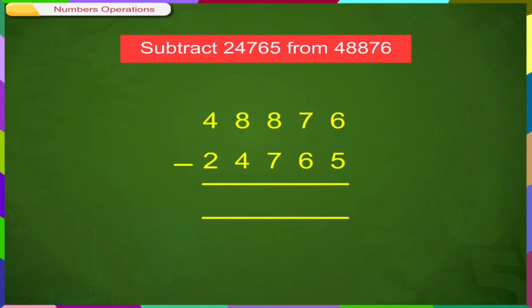To understand subtraction, let's take one example. Subtract 24,765 from 48,876. So, arrange these numbers, the bigger number first.